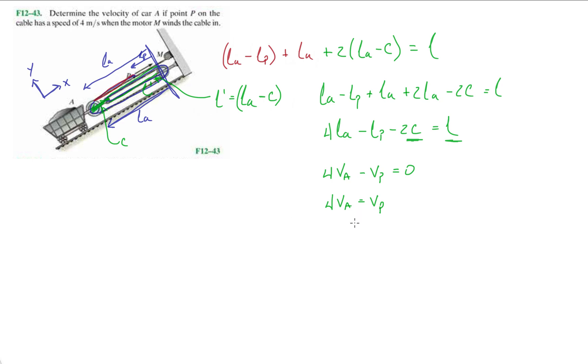Point P is going to the right at 4 meters per second, so that is 4 and there's 4VA. We finish off the problem with the velocity of the cart is 1 meter per second.